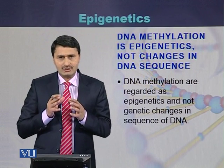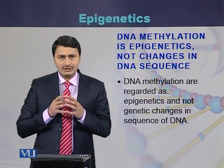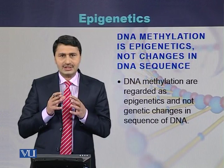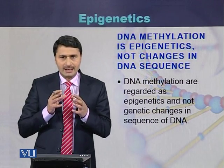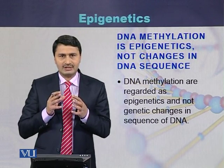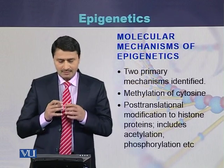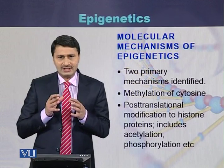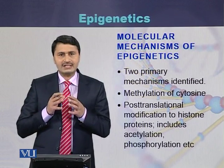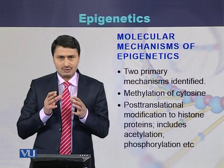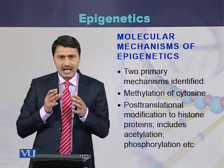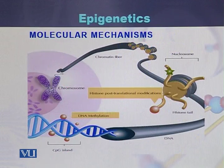DNA methylation or cytosine methylation is epigenetics, but it is not a change in the sequence of the DNA. These can be considered as modifications to the DNA sequence or chromosome structure, but actually these changes are not in the sequence of the DNA. There are two primary mechanisms by which epigenetics occur: cytosine methylation and post-translational modifications of the histones.